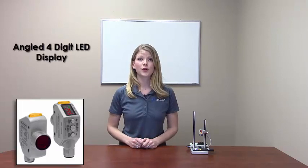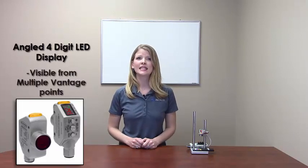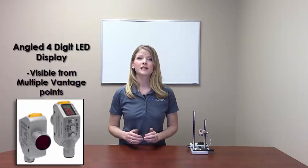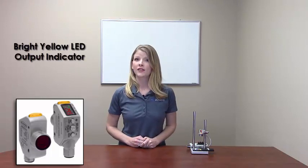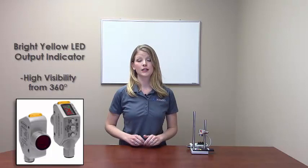The angled 4-digit LED display is easily viewed from multiple vantage points and provides clear, real-time feedback to the user. While in run mode, the distance from the target to the sensor is visible in millimeters on the display. The bright yellow LED output indicator provides high visibility of the sensor's operation from 360 degrees.